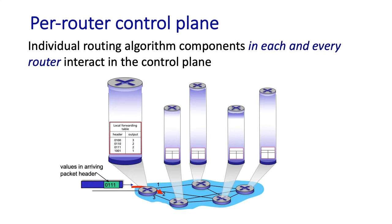Nowadays, forwarding tables are computed rather than hand-configured. And how they're computed is the difference between the traditional routing algorithm approach and the software-defined networking approach to the control plane.